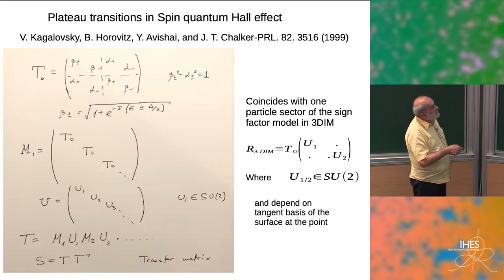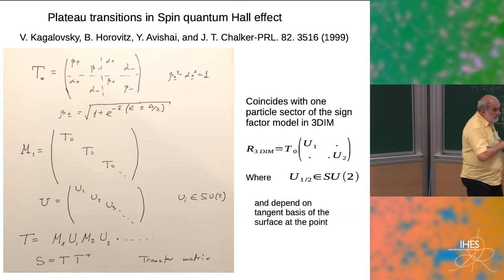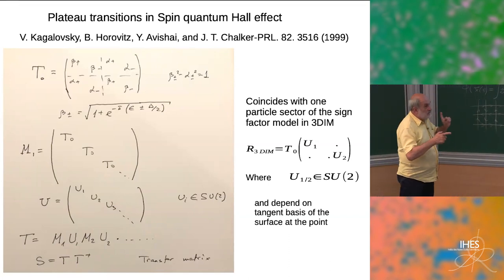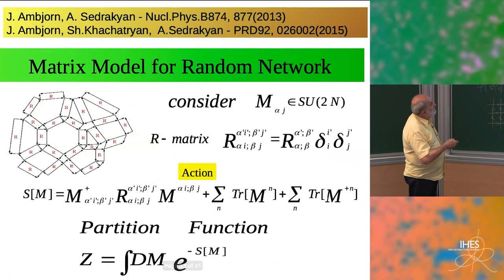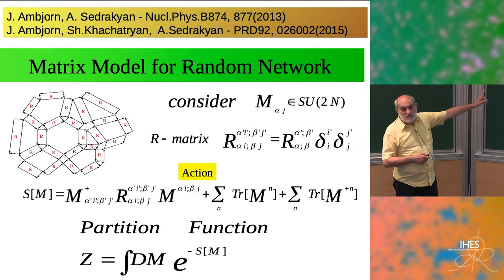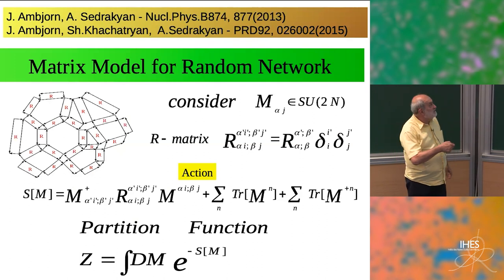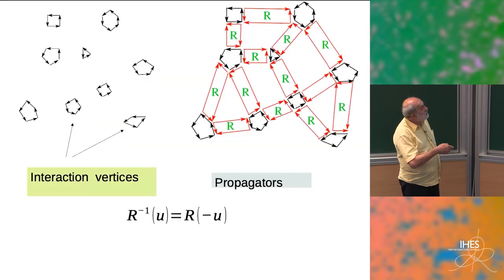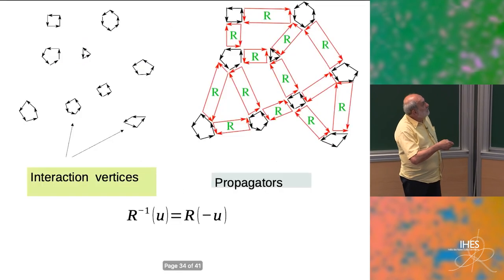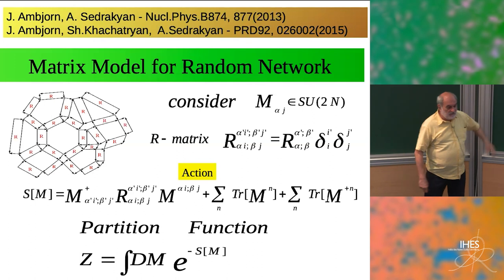There is a restriction: when you put this SU2 group going around the circle, these SU2 groups must come back to the center — that's the only restriction. One can formulate a matrix model which produces this situation, allowing you to put any R matrix onto a random fluctuating surface and construct strings there. Instead of the standard M² term, you put the R matrix in between, and the partition function over random matrices reproduces the partition function of these models.